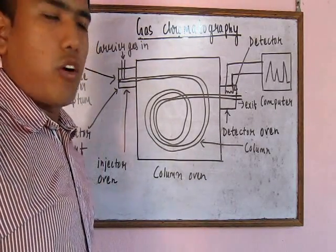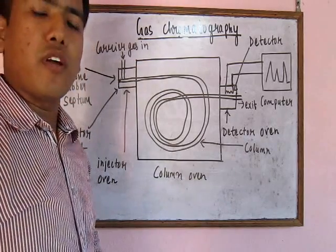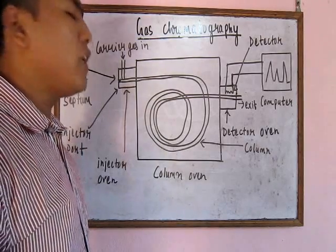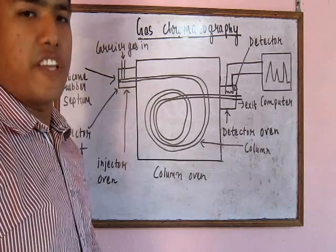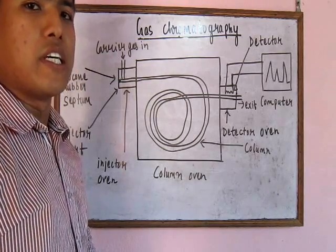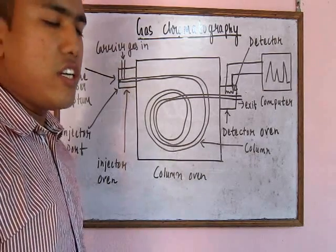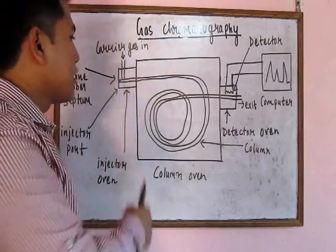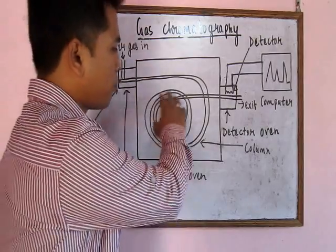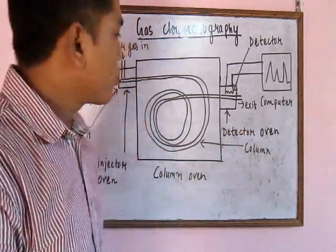Welcome friends. Today we'll be talking about gas chromatography. Gas chromatography is a separation technique in which we use gas as the mobile phase. In this technique, the sample components to be separated are vaporized, carried by inert gases, transported to the column, and separated due to polarity in the column, and then detected.